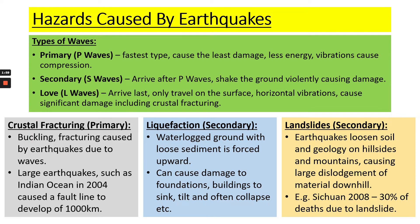The last secondary hazard from earthquakes is landslides. Landslides are caused by the loosening geology and soil of a hilly area, and what that does is cause the dislodgement of all of that material downhill. An example is the Sichuan earthquake of 2008 in Asia, which caused 30% of deaths in that event to be due to landslides and not the earthquake itself.